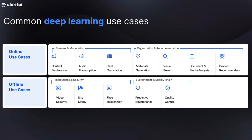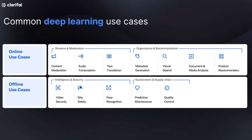Common use cases range from moderating content to transcribing audio to text, translating text from one language to another, generating metadata from your inputs, running visual search, analyzing documents, and recommending products. In the offline world, you can picture a video camera pointing at your facility that can ensure your facility is safe — detecting whether there is a fire, an active shooter, or whether the number of people in a particular space is within OSHA limits.